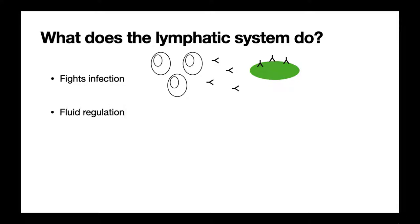Additionally, the lymphatic system is important for the regulation of fluid. In our body, cells require nutrients such as glucose and oxygen, and for those nutrients to get from the blood into the cells they need a mode of transport known as the interstitial fluid. This interstitial fluid moves from the arteries and bathes those cells with nutrients, and can then be reabsorbed back into the arterial system. However, some of it will still remain around the cells, and the lymphatic system must mop up that extra fluid — otherwise it can build up and lead to oedema.